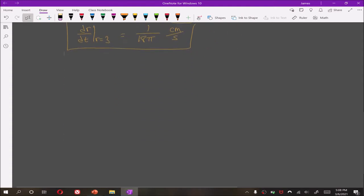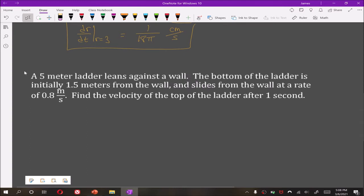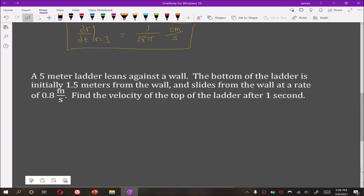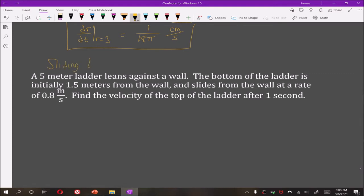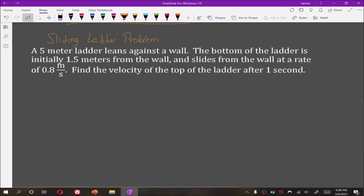Next, we look at a very classic example known as the sliding ladder problem. In this iteration, we are told that a 5 meter ladder leans against the wall. The bottom of the ladder is initially 1.5 meters from the wall and slides from the wall at a rate of 0.8 meters per second. We are asked to find the velocity of the top of the ladder after 1 second.